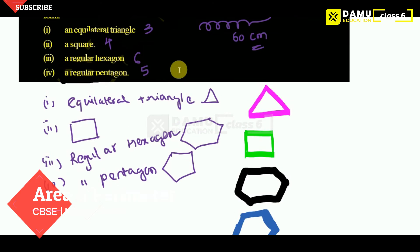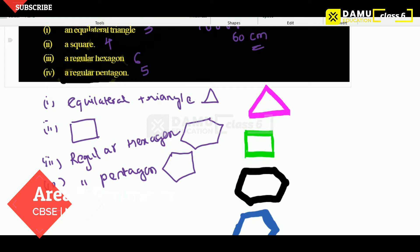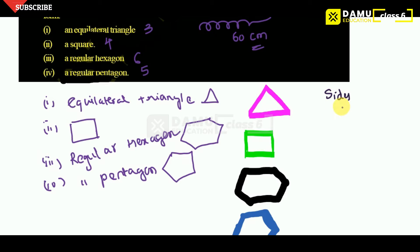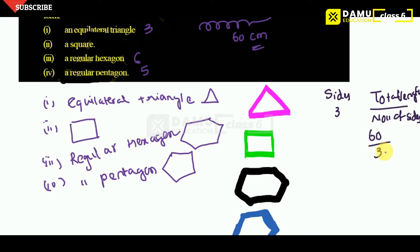For the equilateral triangle, the total length of wire is 60 centimeters. The equilateral triangle has 3 sides. So each side equals total length divided by number of sides: 60 divided by 3 equals 20 centimeters. So each side — AB, BC, CA — will be 20 centimeters.